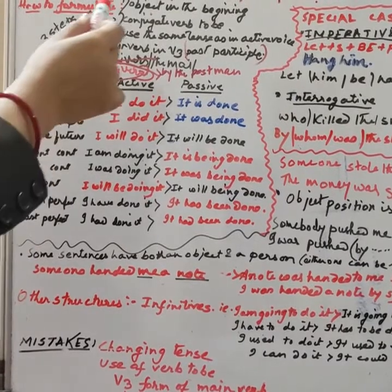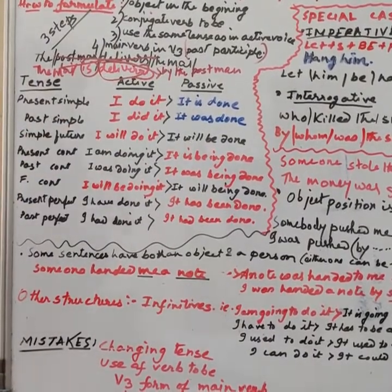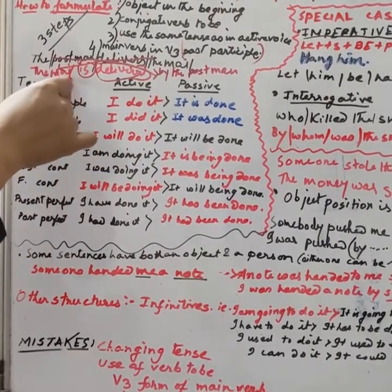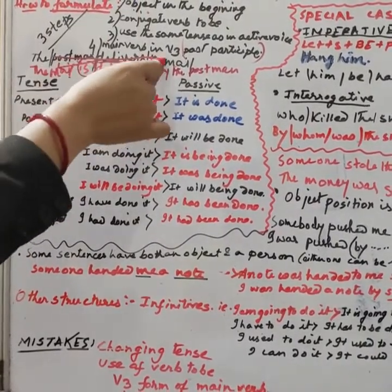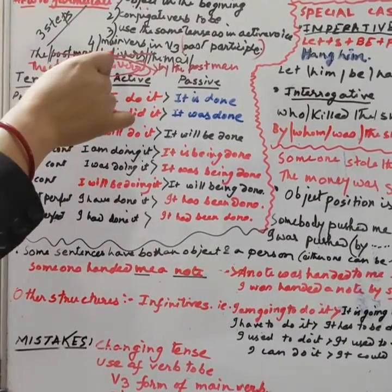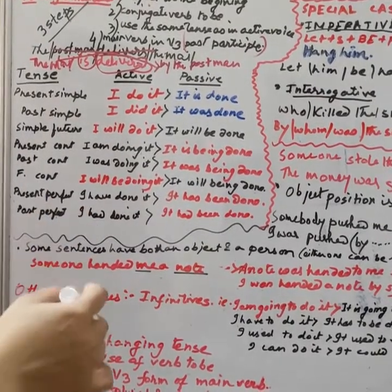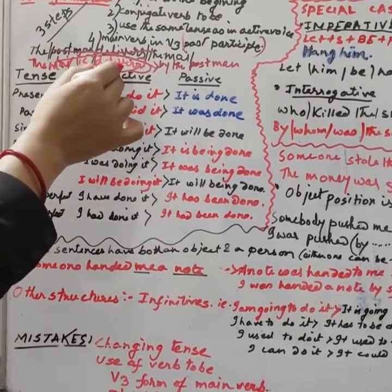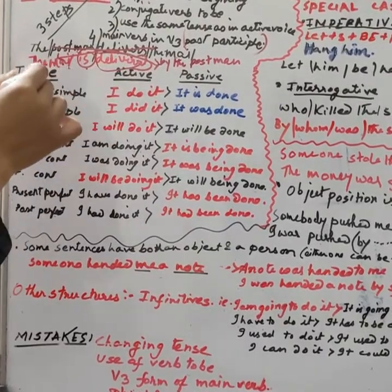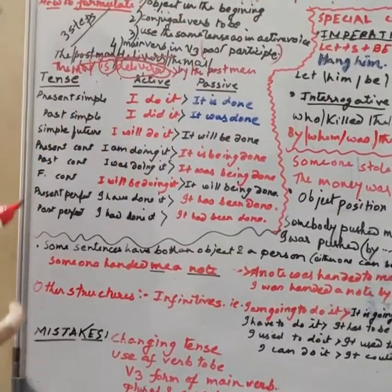Another example: 'The postman delivers the mail.' 'The mail' will come first. 'Delivers' is simple present tense, so we use 'is' and 'delivered' in V3 form. The passive sentence is: 'The mail is delivered by the postman.'